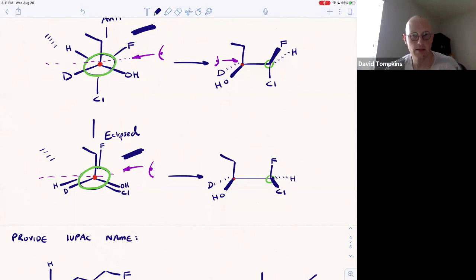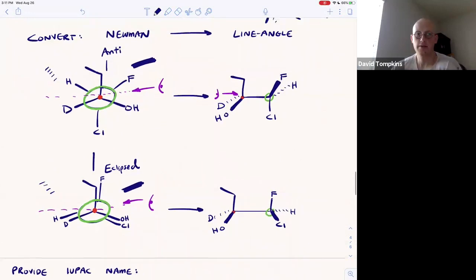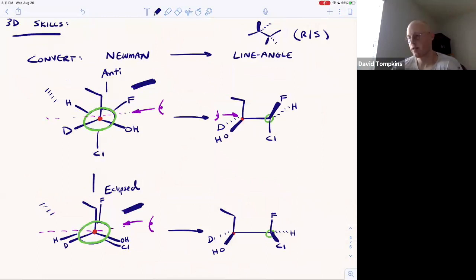It's the same process as the anti conformation. We simply now have eclipsed lines, eclipsed wedges, and eclipsed dashes. For more practice converting Newman projections to line-angle formulas, visit unit one of my Orgo One course guide at chemguides.com.